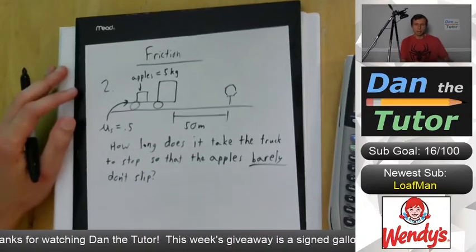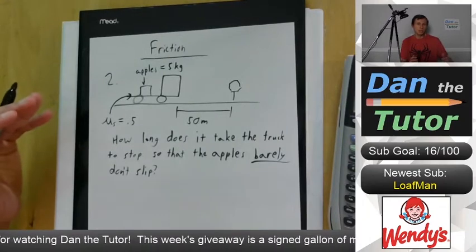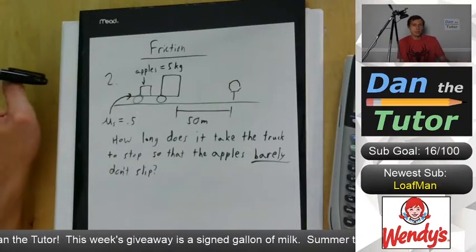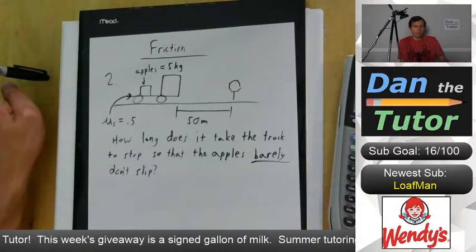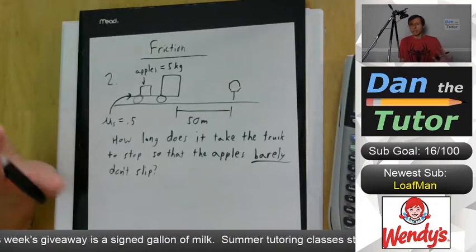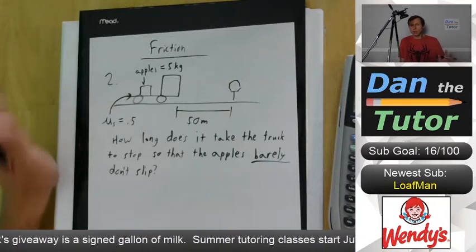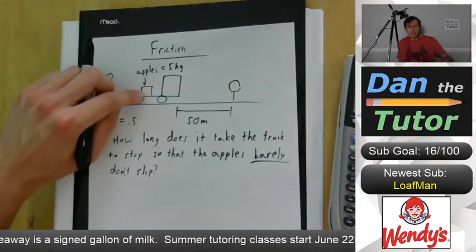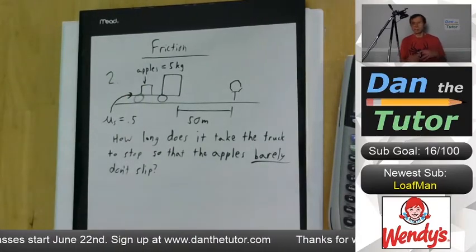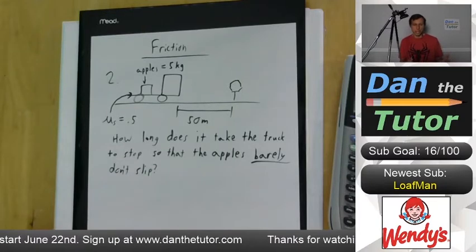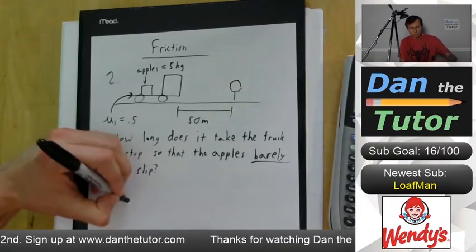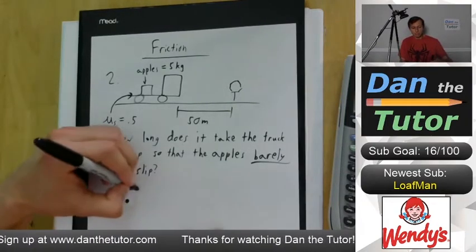How do we solve this problem? The same way we'd solve any forces problem — we draw a free body diagram. One thing we have to be careful about is that we have an object on top of another object. We're definitely drawing the free body diagram for the apples and not the truck, because we want the apples to barely slip. We're talking about the apples, not the truck.